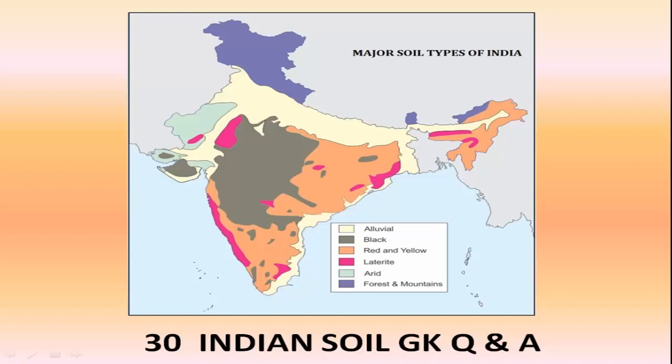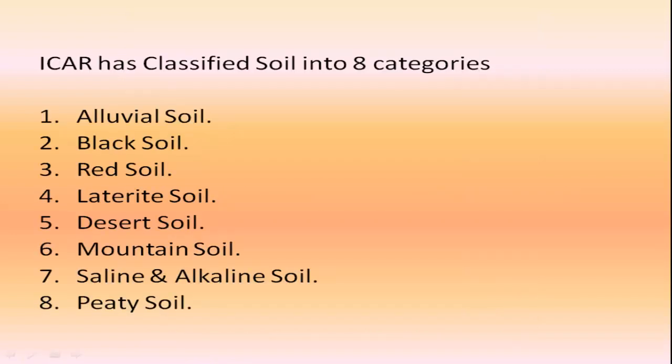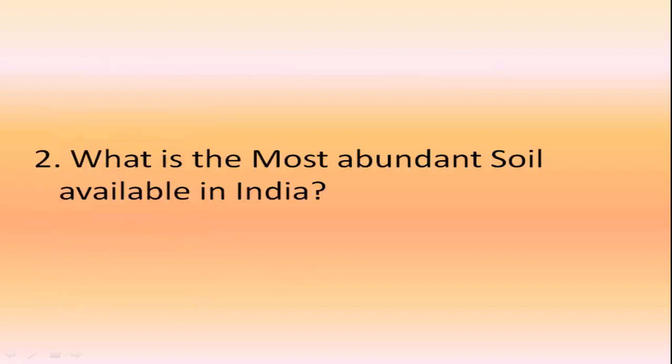Hello everybody, today we'll discuss soil GK questions and answers. The Indian Council of Agricultural Research has classified soil into eight categories: alluvial soil, black soil, red soil, laterite soil, desert soil, mountain soil, saline and alkaline soil, and peat soil. The most abundant soil available in India is alluvial soil.